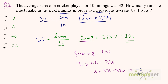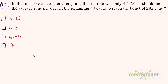So the answer is option D. The second question: in the first 10 overs of a cricket game the run rate was only 3.2. What should be the average runs per over in the remaining 40 overs to reach the target of 282 runs?